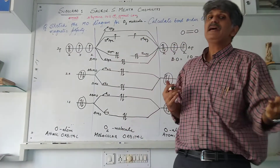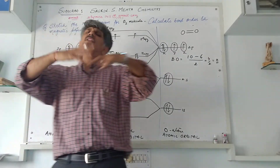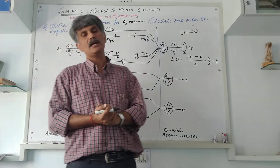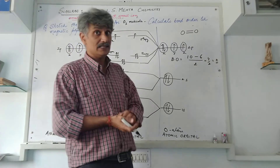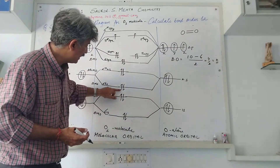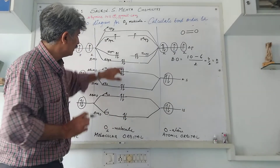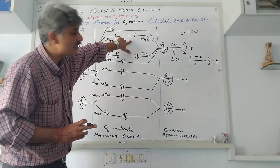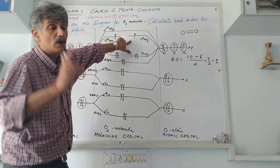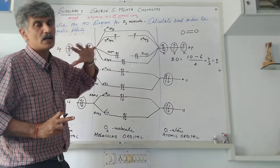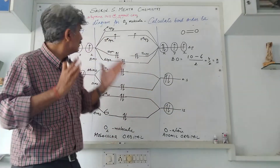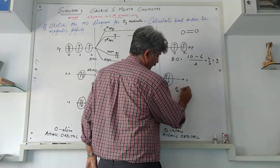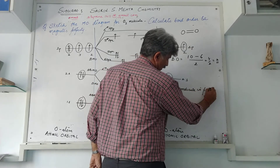Now we determine the magnetic property. If all electrons are paired, the molecule is diamagnetic; if even one electron is unpaired, it is paramagnetic. In the BMOs all electrons are paired. But in the ABMOs — specifically pi star 2px and pi star 2py — each contains one unpaired electron. Because unpaired electrons are present, the O2 molecule is paramagnetic in nature.